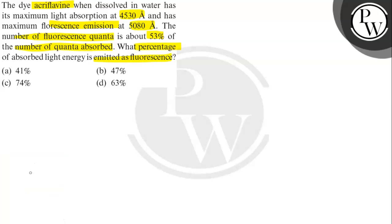So here, percentage of light absorbed. Here lambda value is 4530 angstroms. We convert to meters: 4530 into 10 power minus 10 meters. The energy of each photon absorbed will be...